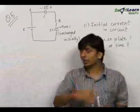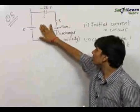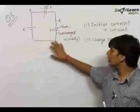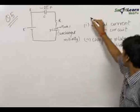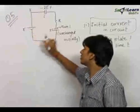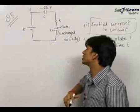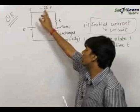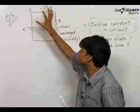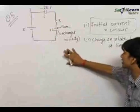The fifth question is a very important question in which you will learn how to find the current and the charges in a circuit with capacitors. We need to first find out the initial current in the circuit. The circuit has a battery of emf E, resistance R, a capacitor with capacitance C, and a capacitor with capacitance 2C. This capacitor initially has some charge, while this capacitor is initially uncharged.